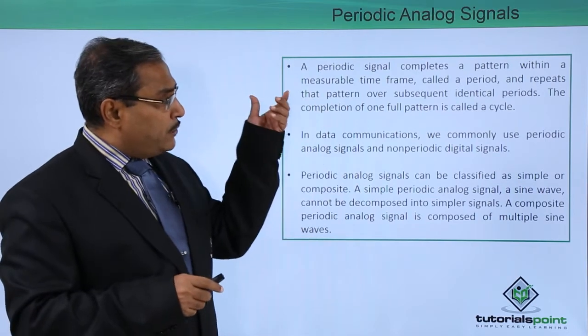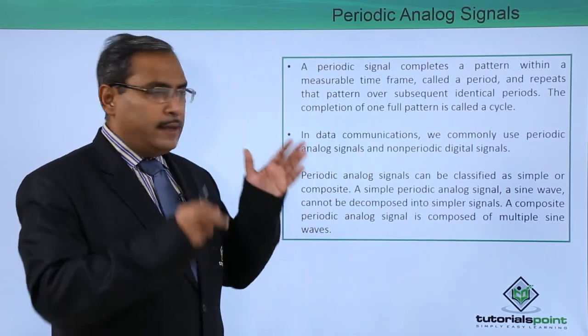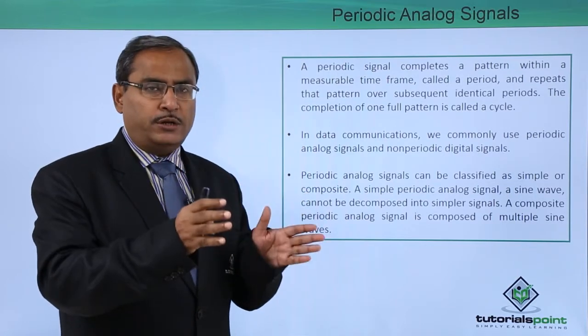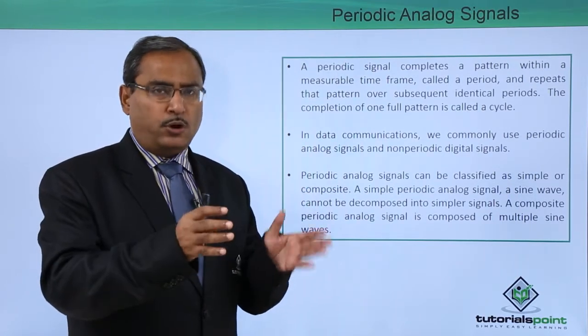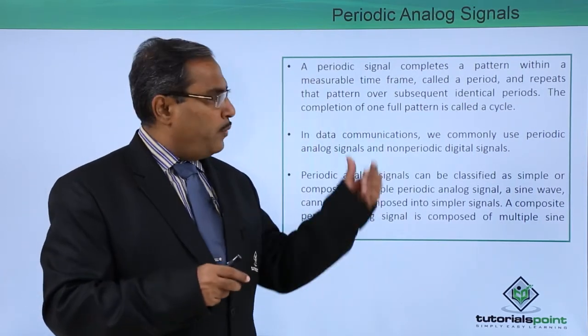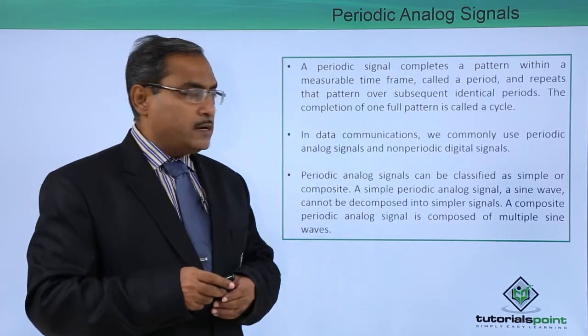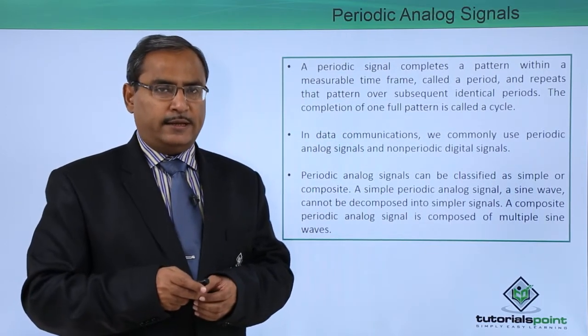In case of periodic analog signals which complete a pattern within a measurable time duration, also known as the time period or period, and repeat that pattern over subsequent identical periods, the completion of one full pattern is known as a cycle.